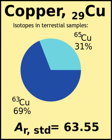Examples: Calcium R standard: 40.078, R abridged: 40.078. Helium R standard: 4.002602, R abridged: 4.0026. Hydrogen R standard: [1.00784, 1.00811], R abridged: [1.0078, 1.0082].